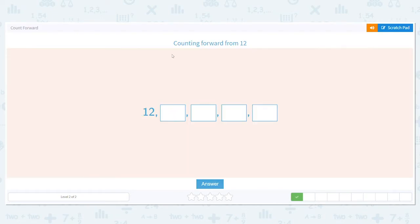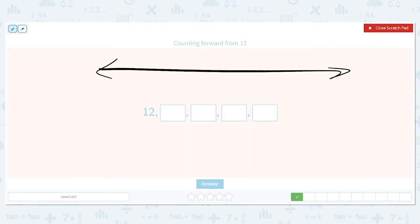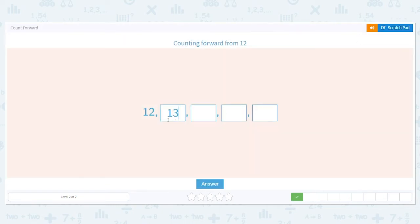Now we're counting on from twelve. So if I make myself a number line, and I start at twelve, I know twelve, what comes after twelve? Thirteen, fourteen, fifteen, sixteen, seventeen, and so on. Again, I like having a visual to help me out when I'm working on things that I'm not necessarily familiar with.